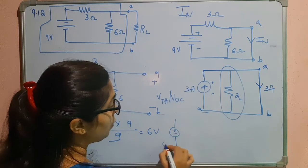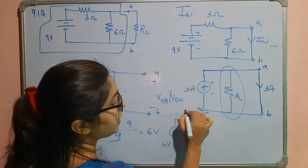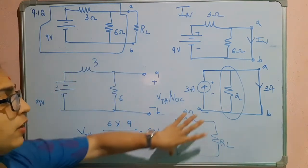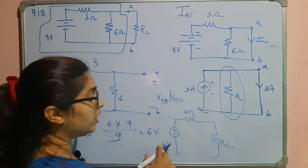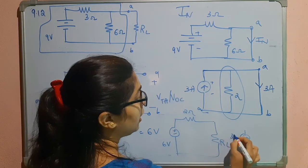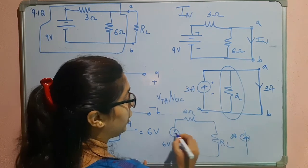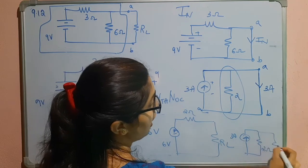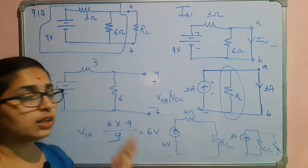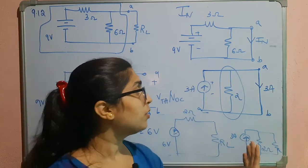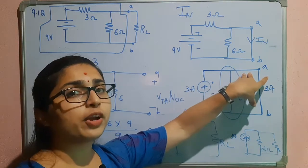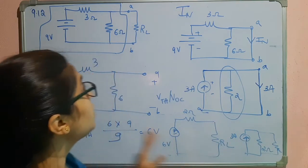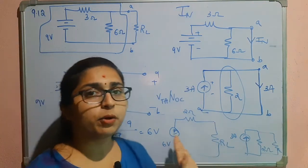So Vth equals 6 volts, and the Thevenin's equivalent is 6 volts in series with 2 ohms, with RL connected. This can be converted to a current source: 6 divided by 2 is 3 amperes, with the arrow pointing towards the positive terminal, in parallel with 2 ohms, and RL. This approach uses Thevenin's theorem, while the previous approach directly used Norton's theorem, shorting terminals a and b to find the Norton's current. This completes the problem.